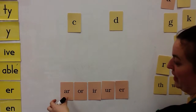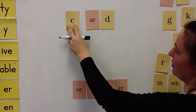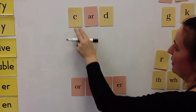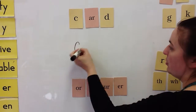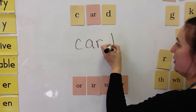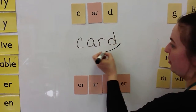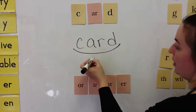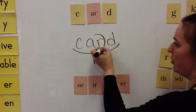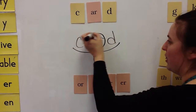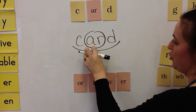R takes control in situations like this, in 'card.' We would mark it like this — we call it the R-controlled syllable, and we circle the R and the letter it's controlling.